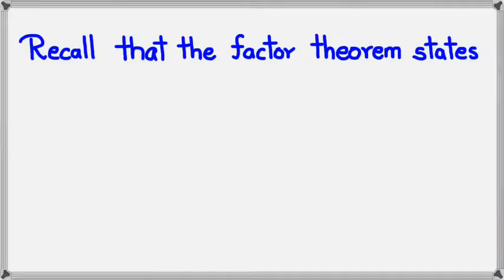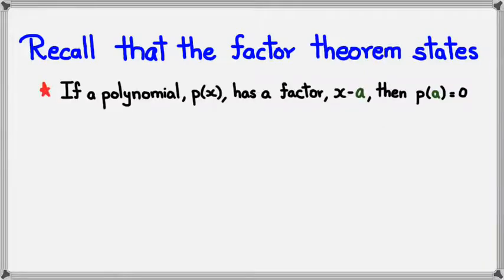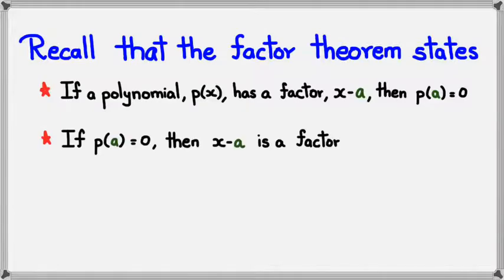Now you might remember the original Factor Theorem, and recall that the Factor Theorem states that if a polynomial p of x has a factor x minus a, then p of a equals 0. If you can't remember this, just go back a couple of videos in this series and you should be able to find it. And the second idea that if p of a equals 0, then x minus a is a factor.